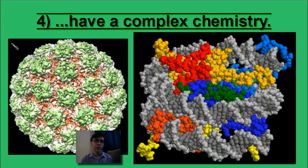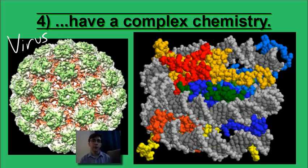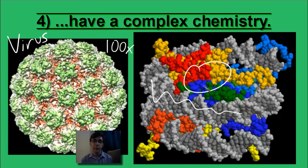This picture is of a virus — one of those things that can cause disease and make you feel bad. We know that viruses are very small because some of the world's best microscopes can barely see them. But it turns out that this virus is actually 100 times as big as the DNA and protein shown in the previous picture. It's true that all living things have a complex chemistry.